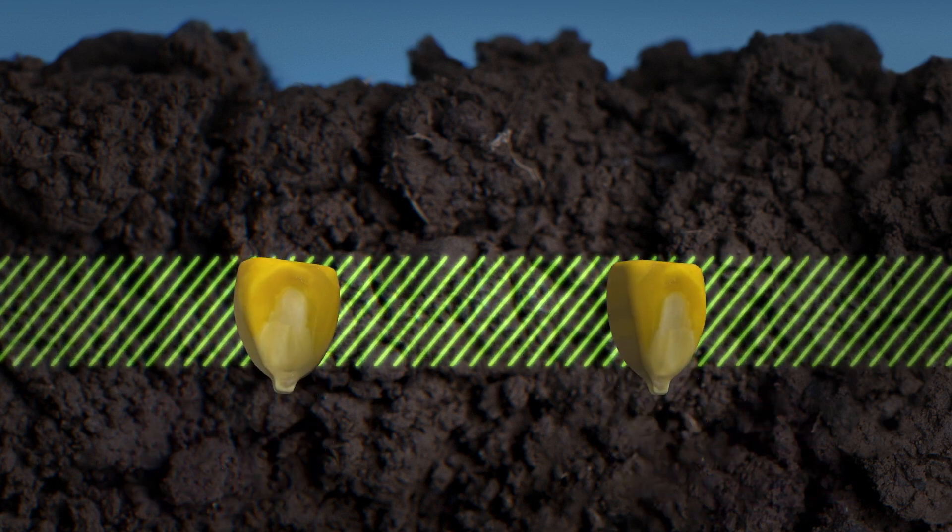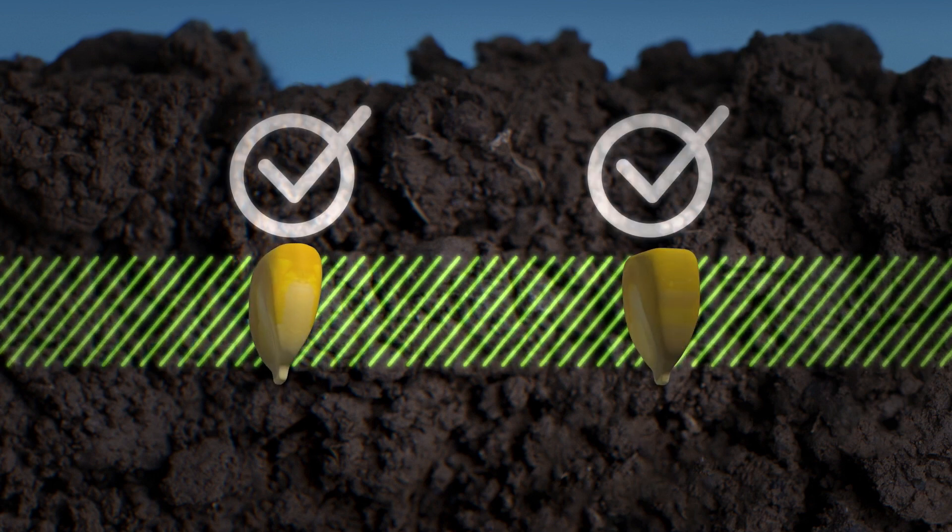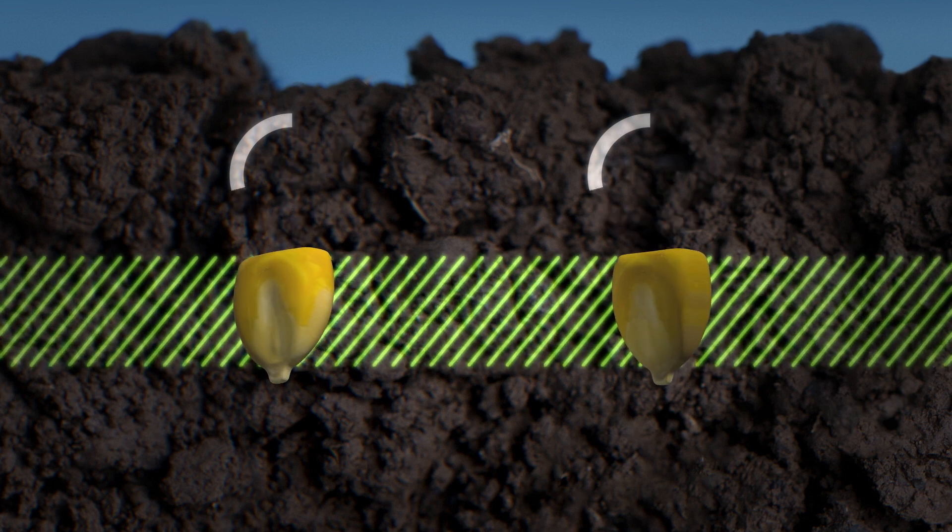By placing every seed at the exact same optimal depth for germination and emergence, emergence will be even, leading to a higher yield.